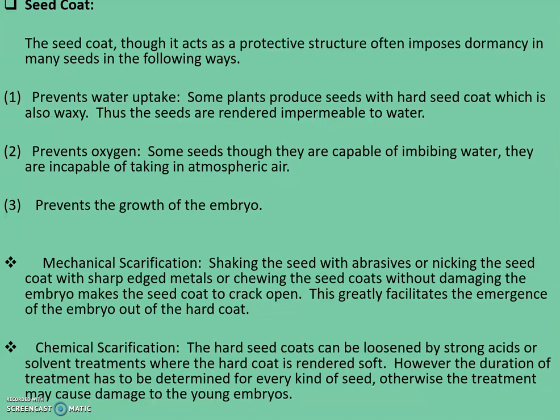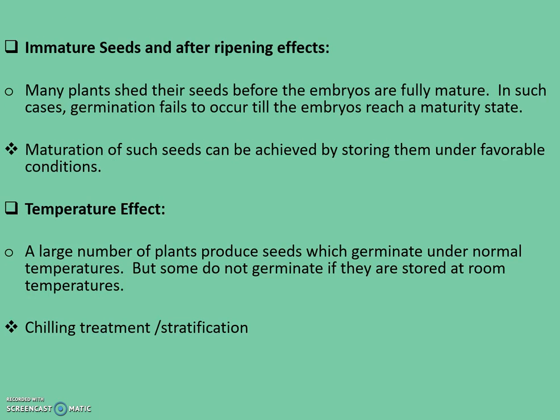The next method is chemical scarification. Hard seed coats can be loosened by strong acids or solvent treatments, where the hard coat is rendered soft. However, the duration of treatment has to be determined for every kind of seed, otherwise the treatment may cause damage to the embryo. The next cause of dormancy is immature seeds.